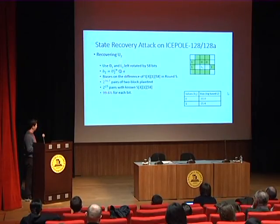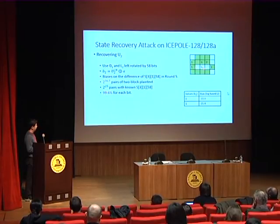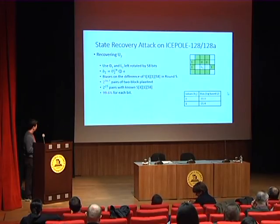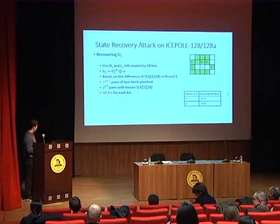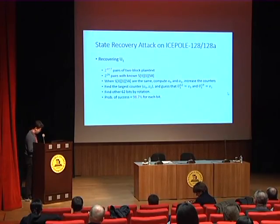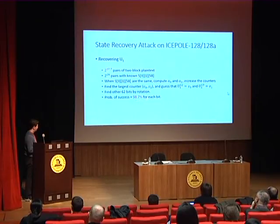Similarly, we recover U2 using more information on the state by fixing some input bits to get better S-box probability, using D1 and L2 left-rotated by 58 bits, establishing equations for U2 as unknown bits and a constant. We need 2^36.7 pairs of two-block plaintexts, with a success rate of 99.6% for each bit. For U1, we similarly need 2^37.7 pairs of two-block plaintexts, with a success rate of 98.7% per bit.